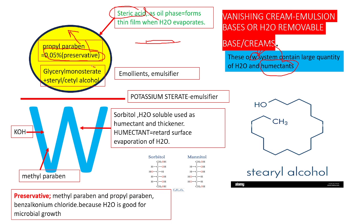Next is glyceryl monostearate, or cetyl alcohol — a stearyl alcohol containing 18 carbons, or cetyl alcohol containing 16 carbons. These are added here and will act as emollients or emulsifiers.